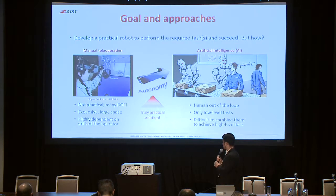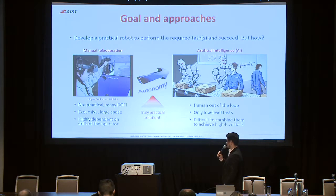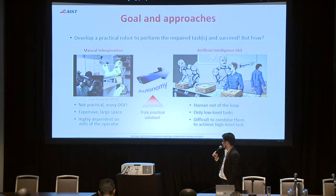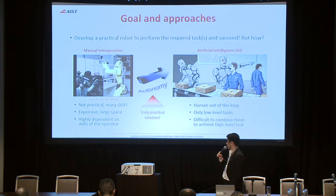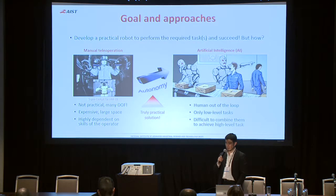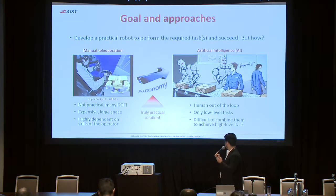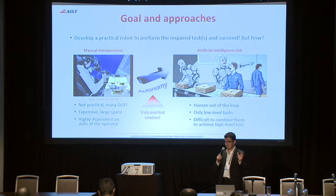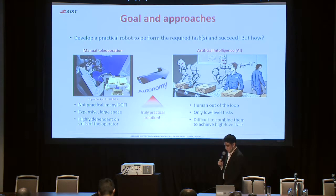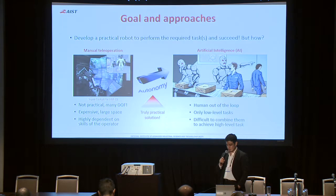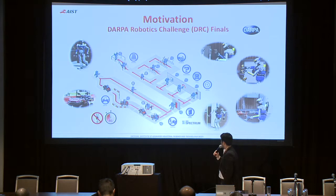There are two sides of the spectrum for achieving this. On one end is manual teleoperation, like the super cockpit used for HRP1S — not practical, requiring control of many degrees of freedom simultaneously, expensive, large space, and highly dependent on operator skill. On the other end is a fully AI-based system that takes the human out of the loop. However, AI has been proven to work well only with low-level tasks; when integrating them to perform high-level tasks, AI is not so reliable. The truly practical solution should lie in between.